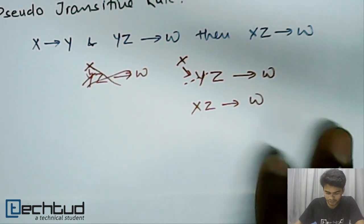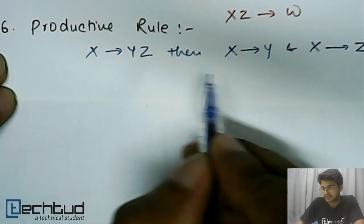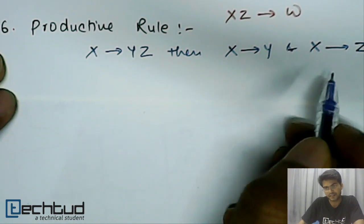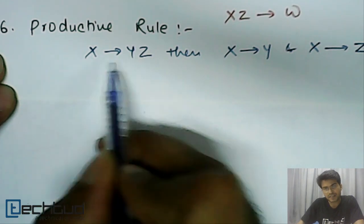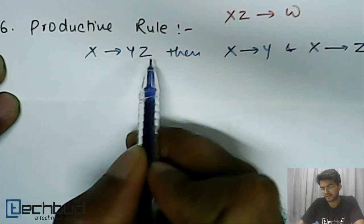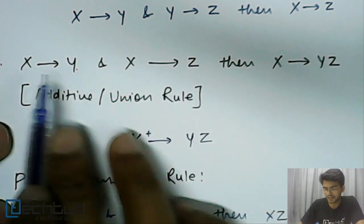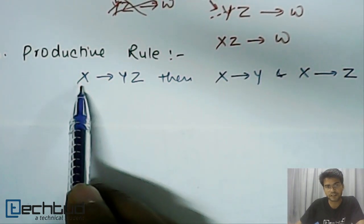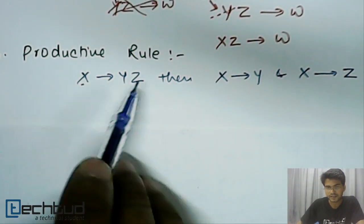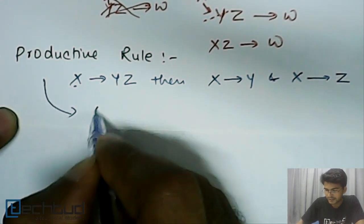We have another inference rule called the productive or decomposition rule. It says if x determines yz, then x determines y and x determines z separately. What we are doing is decomposing: x can determine both y and z, so we can separately write x determines y and x determines z. This is just the opposite of the union or additive rule — where we combined them, here we decompose. We can also call it the decomposition rule.